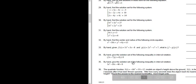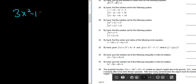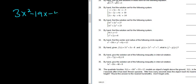Problem number 35. By hand, give the solution set of the following inequality in interval notation. Okay, so the inequality is 3x squared minus 19x minus 40, and it's less than 0. So step one in these problems is to make sure you have 0 on one side, which we have, and to factor the other side.